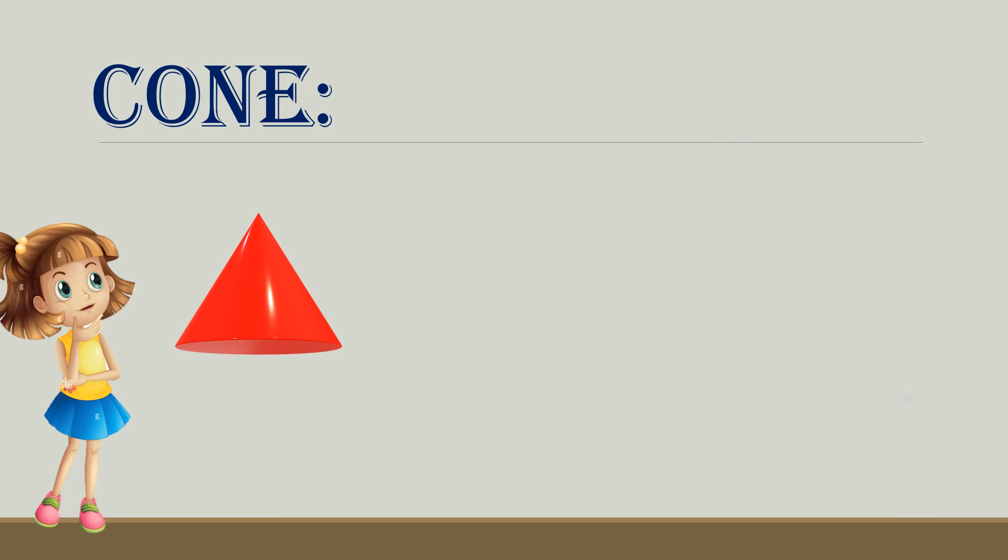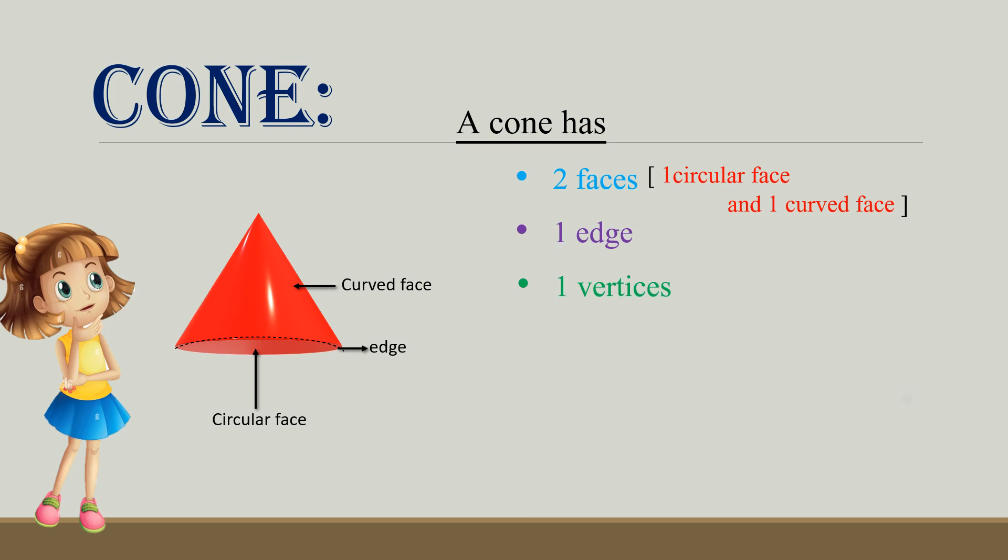Cone. A cone has two faces: one circular face and one curved face. Total two faces, one edge, and one vertices. Examples: party hat and cone ice cream.